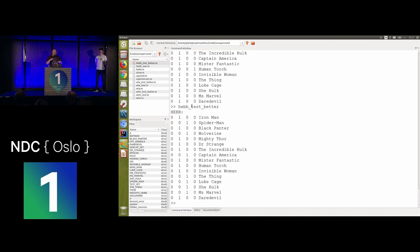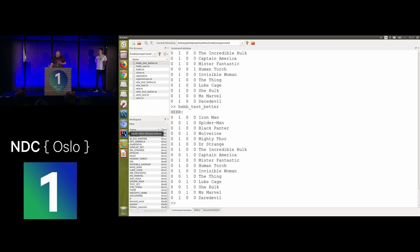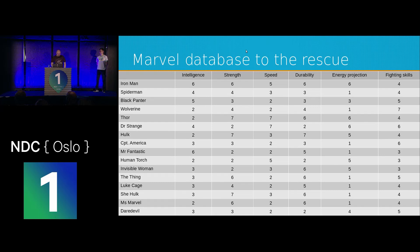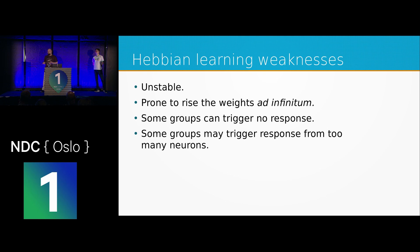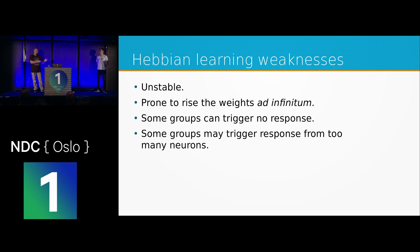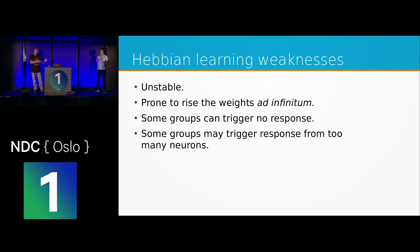Running the Hebbian learning, we see that although we have four neurons, only two responded, and the second one is really weak. Running it several more times shows this is a common situation. The issue is that weights rise toward infinity — those neurons with fast-rising weights respond with such high values that others have no chance to become masters of their own groups. Some neurons effectively starve. We could tweak parameters, but let's jump to something better.